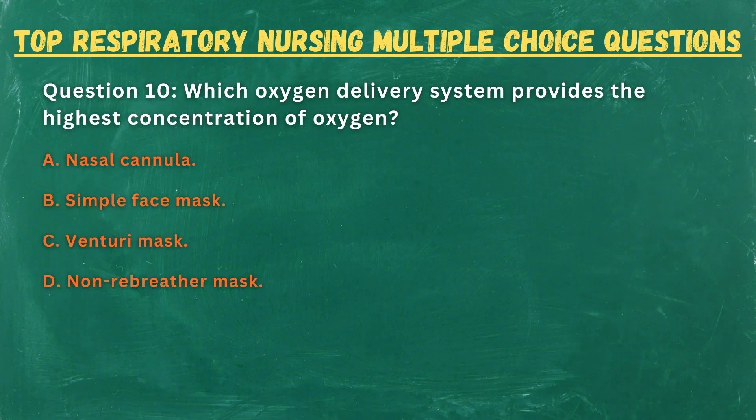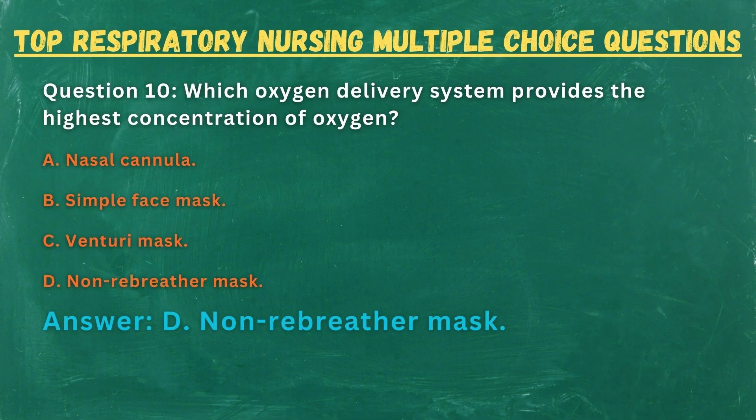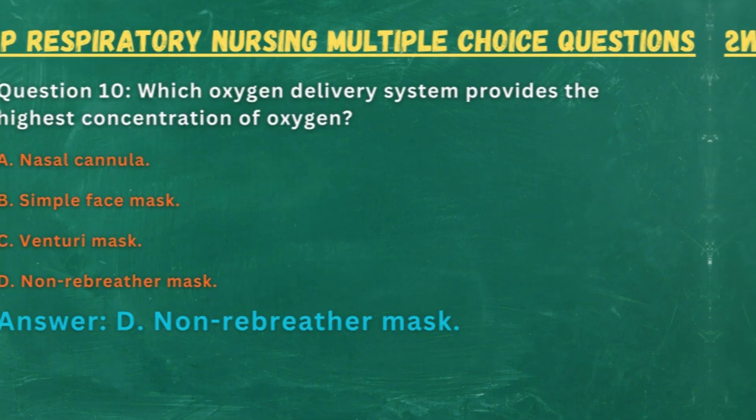Question 10. Which oxygen delivery system provides the highest concentration of oxygen? A. Nasal cannula. B. Simple face mask. C. Venturi mask. D. Non-rebreather mask. Answer: D. Non-rebreather mask.